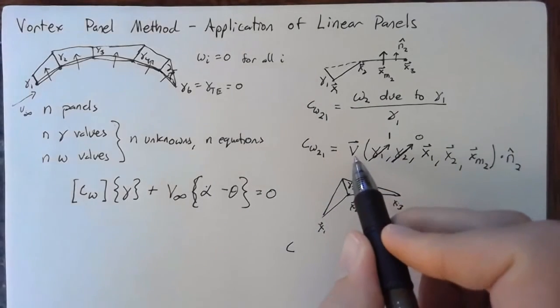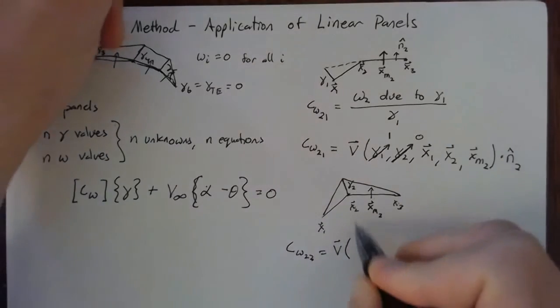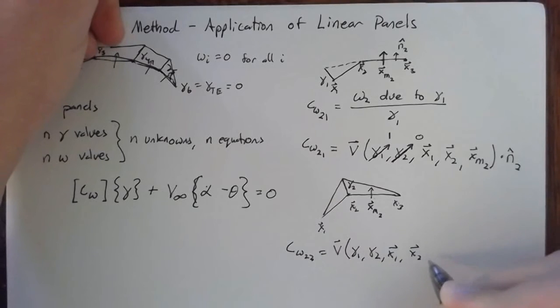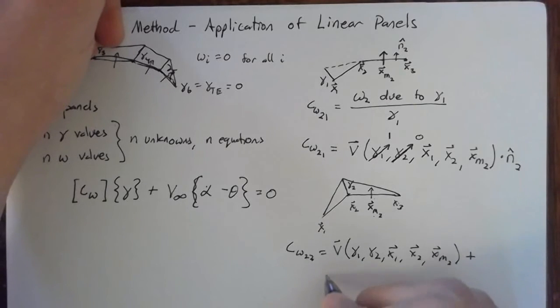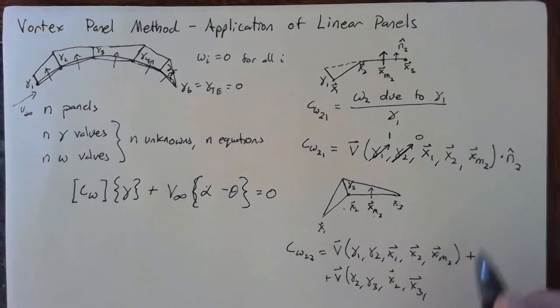Now we're going to have to find the velocity due to two different panels. So the coefficient of upwash on panel 2, on the midpoint of panel 2, due to gamma 2 is going to be the velocity of panel 1. So we're still going to have gamma 1, gamma 2, x1, x2, and we're still looking at x at the midpoint of panel 2. But now we have to add the second panel. So what does the second panel look like? Well, this is going to be gamma 2, gamma 3, and then the geometry is defined by x2 and x3, but we're still trying to find the upwash at the midpoint of panel 2. So this term is still going to be xm2.